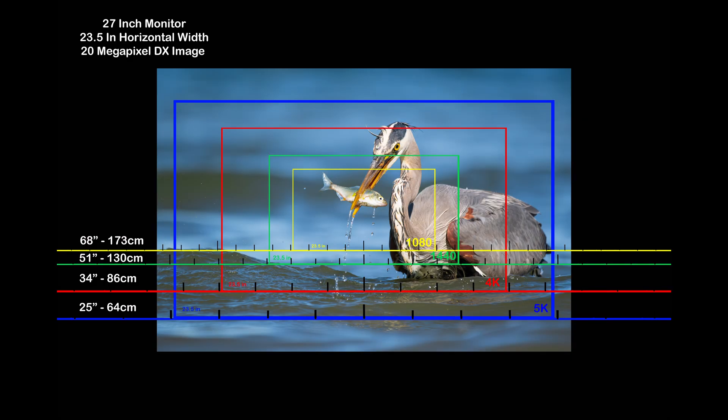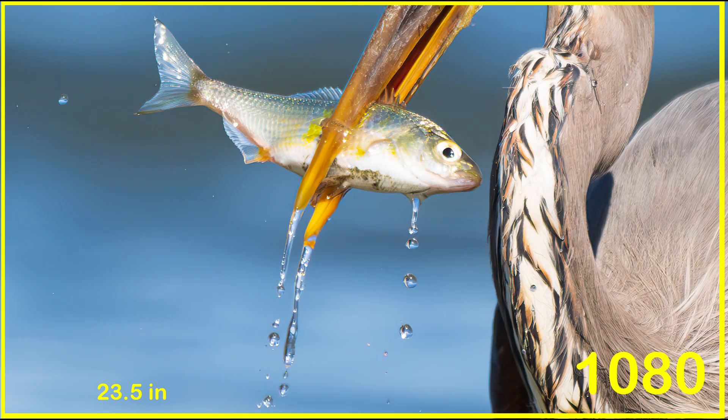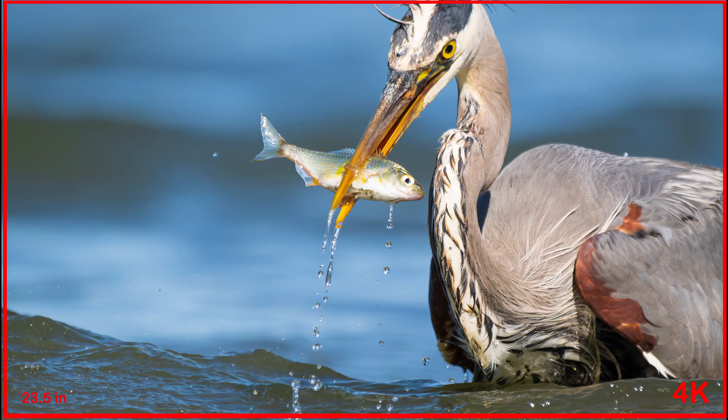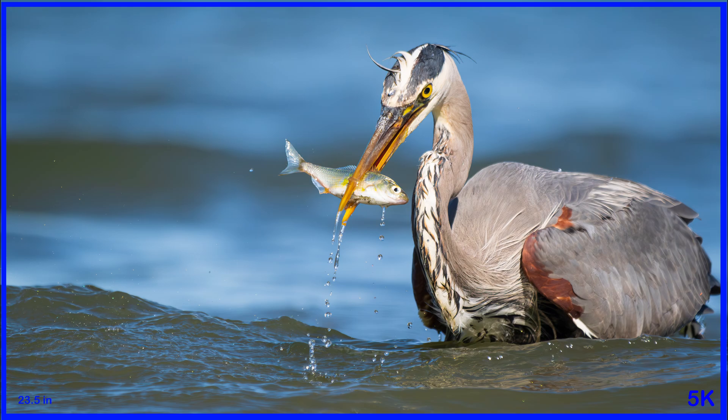Now lastly, a quick look at 20 megapixels — a 5,568 by 3,712 DX or crop sensor. This is also interesting in that a 20 megapixel crop sensor looks the same as a 45 megapixel full frame at one-to-one on all of the monitors; it's just that part of the outside image has been cropped away. So noise and sharpness will be comparable at a pixel level. The 1080 image is like looking at a 68-inch print, the 1440p is like looking at a 51-inch print, the 4K is like looking at a 34-inch print, and the 5K is like looking at a 25-inch print.